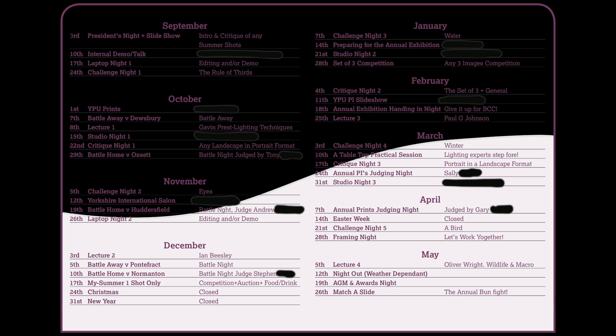The committee organise the competitions, the away days, and the battles against other camera clubs locally. There are varying things on the syllabus — from a laptop night where people can bring in their laptops and do some editing or be shown how to use Lightroom, Photoshop, or other software. We also have challenge nights throughout the year where someone comes up with challenges that are judged internally by the members. The first one for example is the rule of thirds, and different themes run throughout the syllabus.